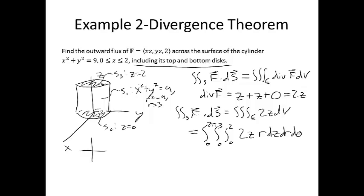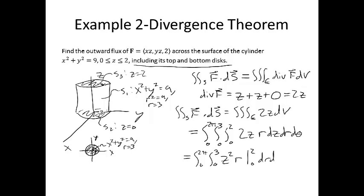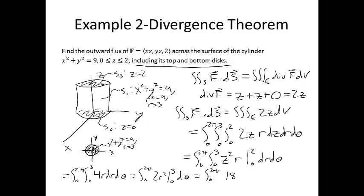If we look at the projection of our solid region onto the xy-plane, it's going to be the interior of the circle x² + y² = 9, or r = 3. So r goes from 0 to 3, and since we want the whole circle, θ goes from 0 to 2π. Evaluating: we get the integral from 0 to 2π of the integral from 0 to 3 of [z² r] from 0 to 2 dr dθ, which gives the integral from 0 to 2π of 2r² from 0 to 3 dθ, which is the integral from 0 to 2π of 18 dθ.